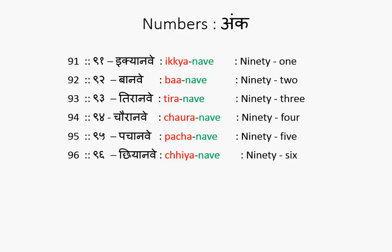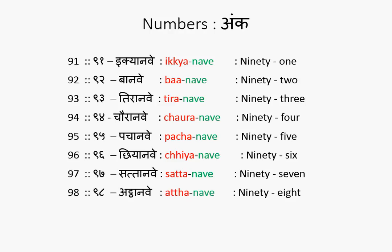Then comes Saat, 7. 97 becomes Sataanve. After Chiyanve, Sataanve. Then Atanve — Aat is 8, so Atanve is 98. Ninnyanve is 99. Ninnyanve, Ninnyanve — 99 is Ninnyanve.